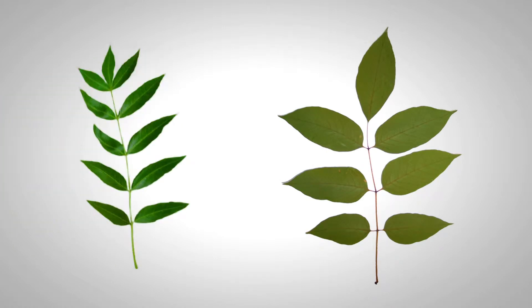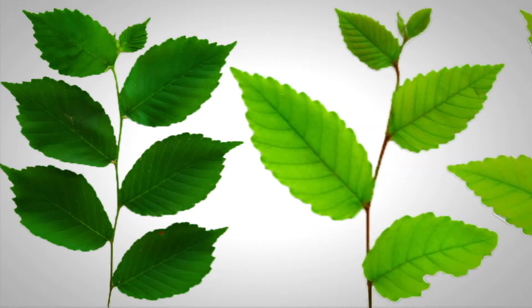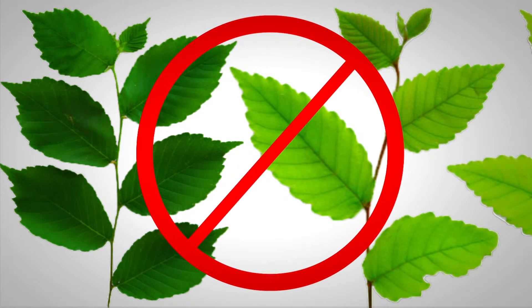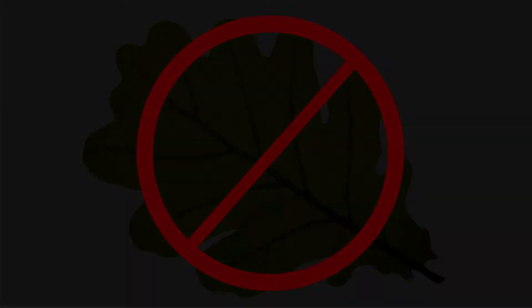All of our ash species are going to have between 5 and 11 of these leaflets. So if you're looking at a tree and it's got fewer than 5 or more than 11 leaflets, or it has a simple leaf, it's not an ash tree.